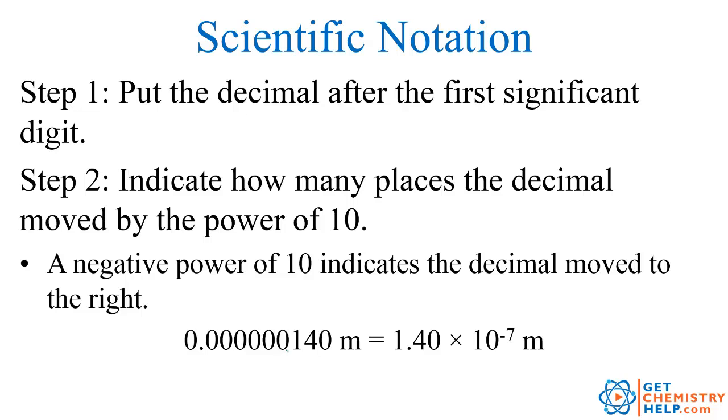In our previous lesson on significant digits, we learned that zeros to the left of a number, or the leading zeros, are never significant. So none of these are significant. Now, zeros after a number are if there's a decimal, and there is. So we have 3 significant digits. I write those 3 significant digits again.